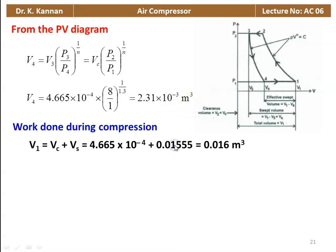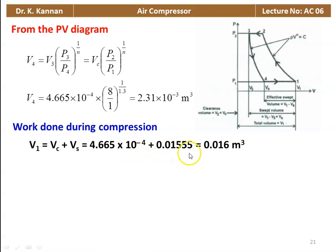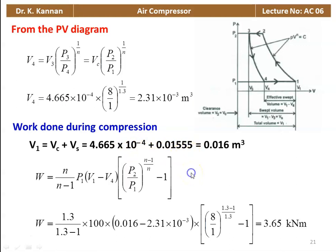Then work done during the compression process. To calculate the work done, first we require V1, the volume at the beginning of the compression process, which is Vc plus Vs. So 4.665 times 10 to the power minus 4 plus 0.01555 equals 0.016 meter cube.